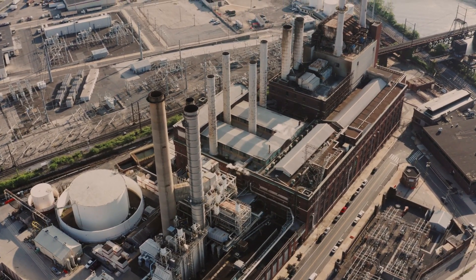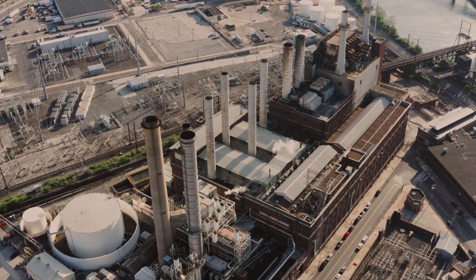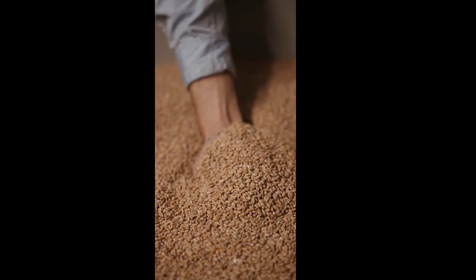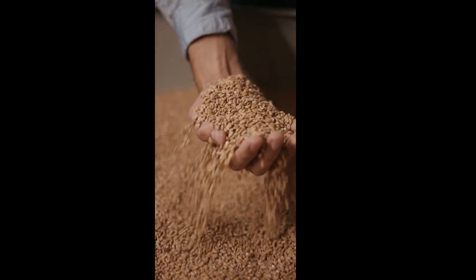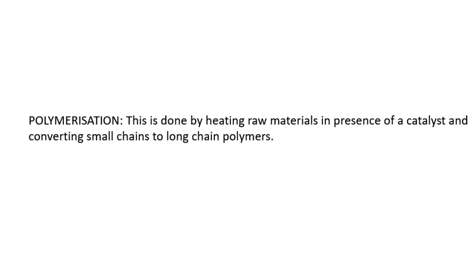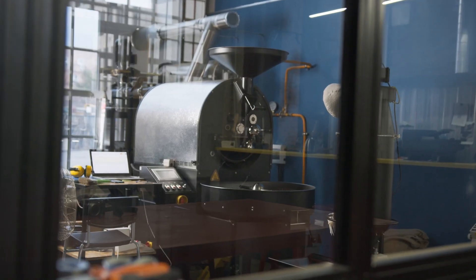Since plastics are derived from petrochemicals, there are various unique sets of procedures for each type of plastic. The next step is polymerization, where the raw materials are heated in the presence of a catalyst and we convert small chains into large chains of polymers.